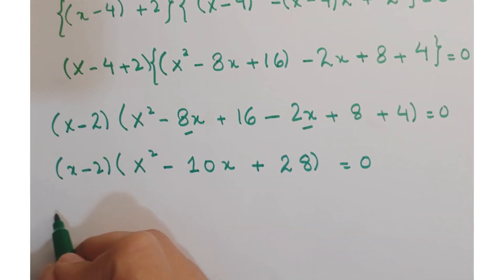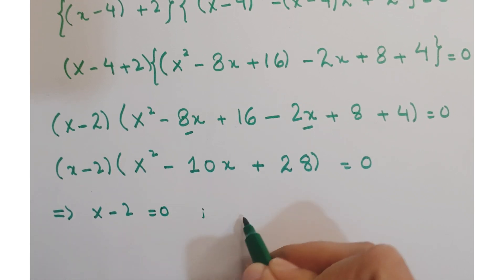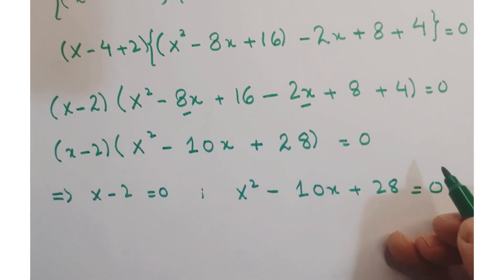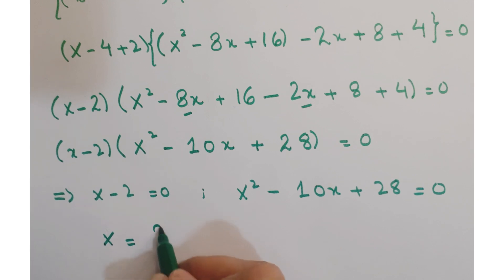Now we have two possibilities: x minus 2 equals 0 and x square minus 10x plus 28 equals 0. So the first solution of x is equals to 2.